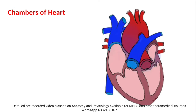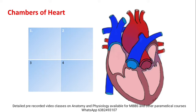Starting with the Chambers of the Heart. The heart has 4 chambers. We will put a diagram to illustrate. There are 4 chambers — 2 on the right side and 2 on the left side.